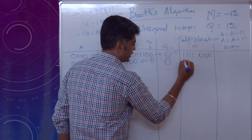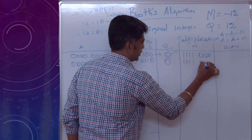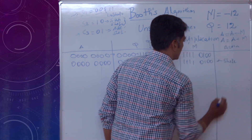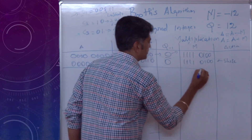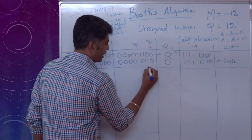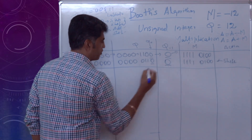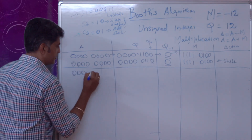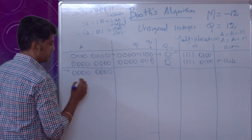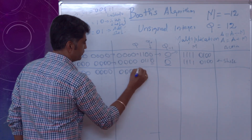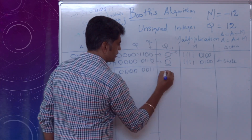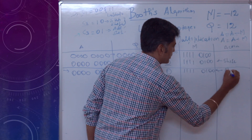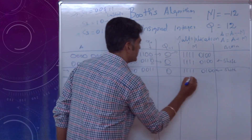The multiplicand value remains 1 1 1 1 0 1 0 0. Step 1 is now completed. In step 2, again Q0 and Q(-1) are both 0, so I perform arithmetic shift again. After shifting: A = 0 0 0 0 0 0 0 0, Q = 0 0 0 0 0 0 1 1, Q(-1) = 0. The multiplicand value is 1 1 1 1 0 1 0 0. Step 2 is completed.